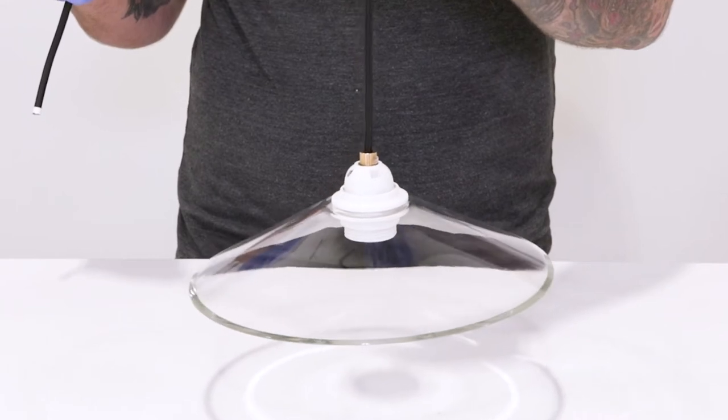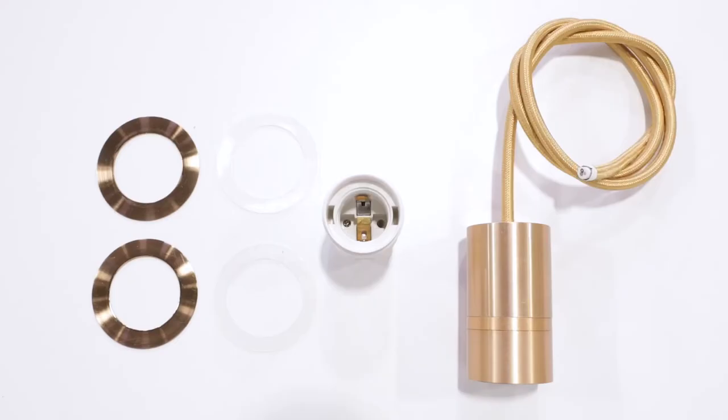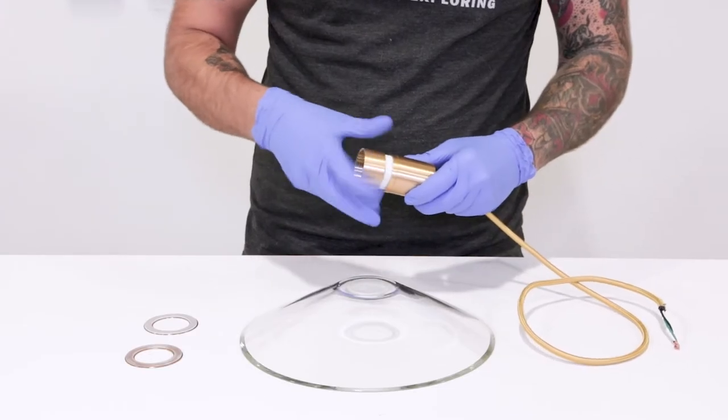Next we'll apply the shade to our AIO socket kit, which for the 1 and 5 eighths inch opening, you can use the AIO with or without the spacer rings. However, we personally prefer the finished look of the included spacer rings, and it makes it a bit more secure around the lip of the shade, especially if you're working with heavy glass or ceramic.